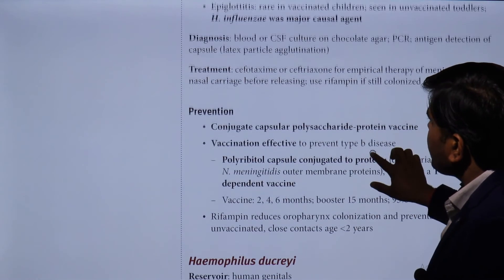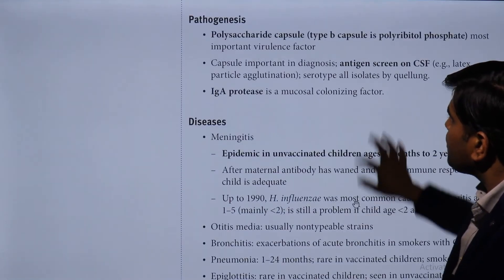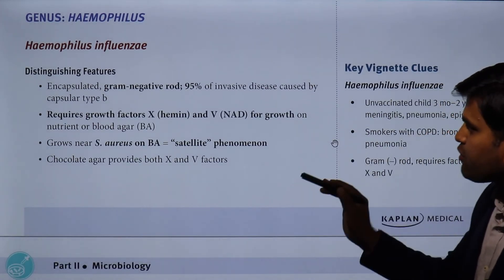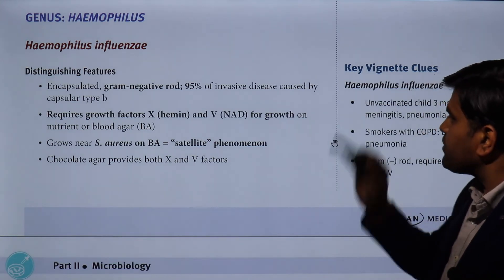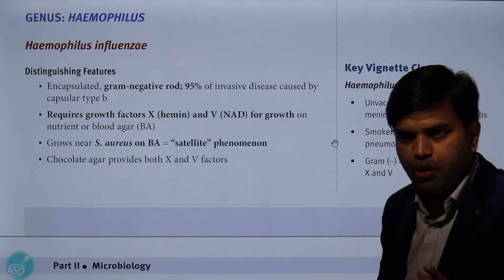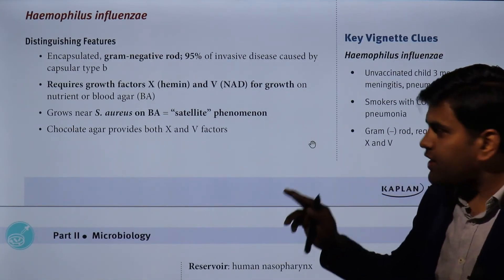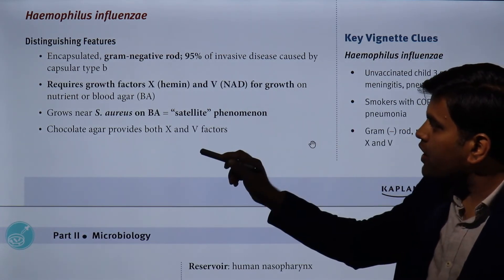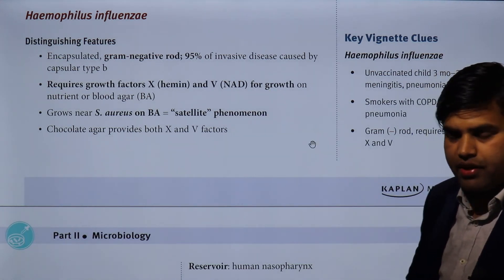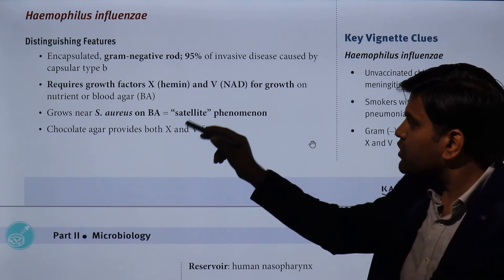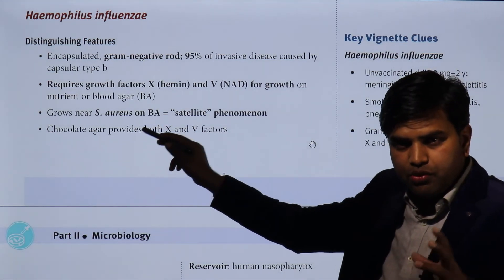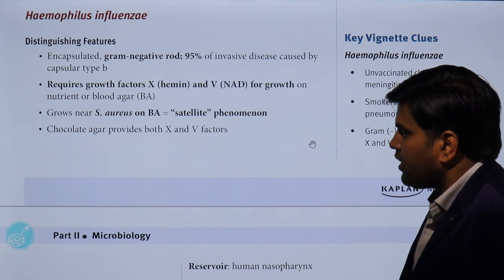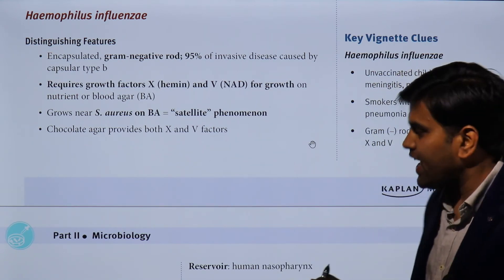Reviewing the Kaplan book pathogenesis: Haemophilus influenzae is an encapsulated gram-negative bacterium. Ninety percent of invasive diseases are caused by the capsular type B strain. It requires growth factors X (hemin) and V (NAD). On blood agar it requires co-growth with Staph aureus, which lyses RBCs releasing the V factor — this is the satellite phenomenon. It grows easily on chocolate agar because chocolate agar provides both X and V factors.